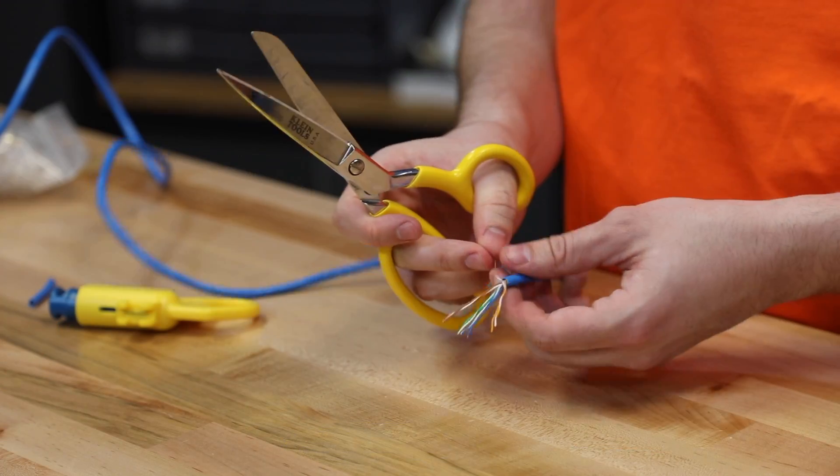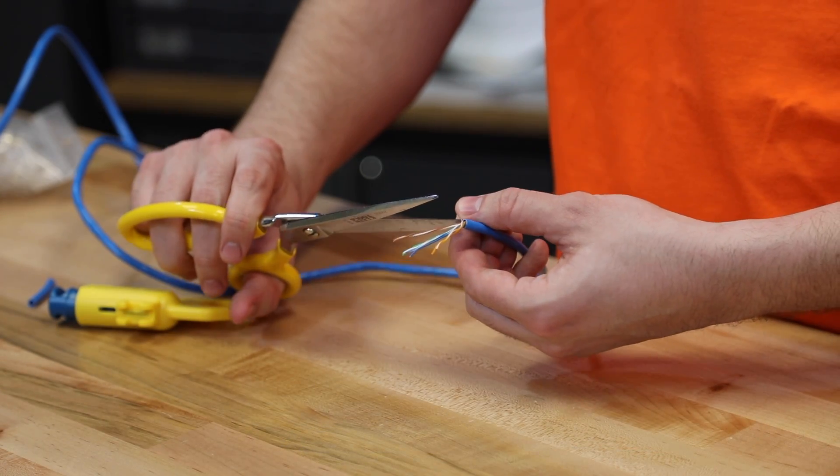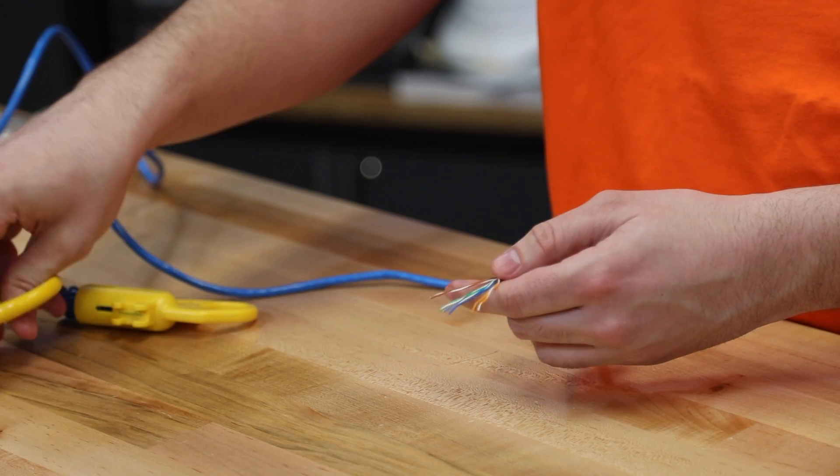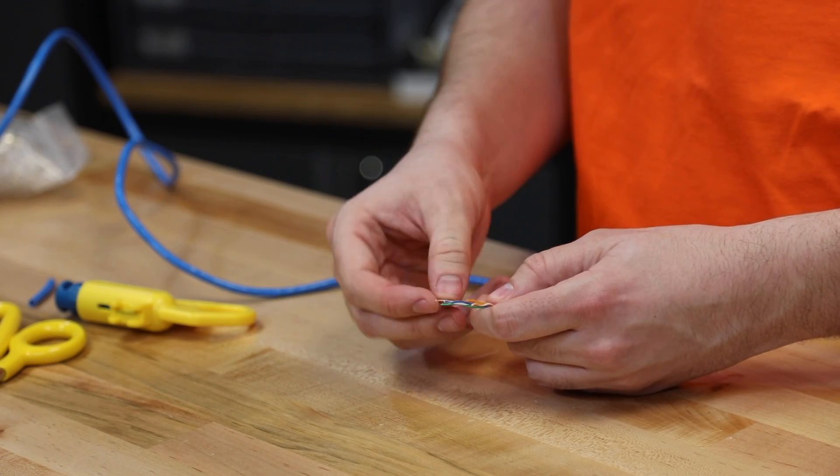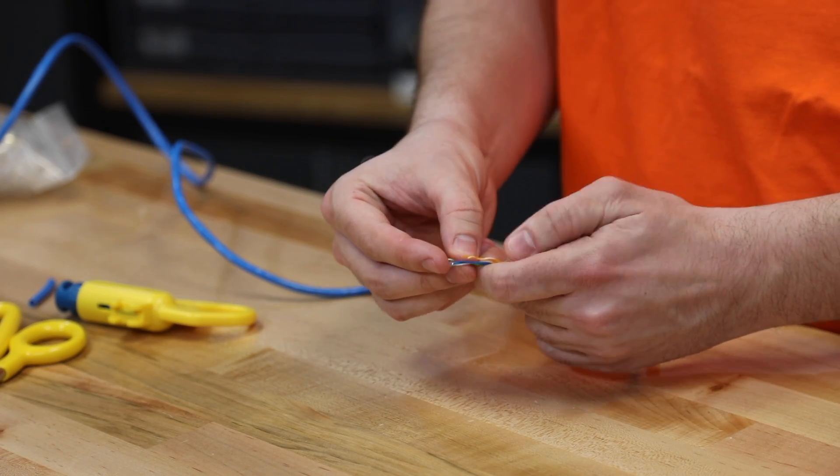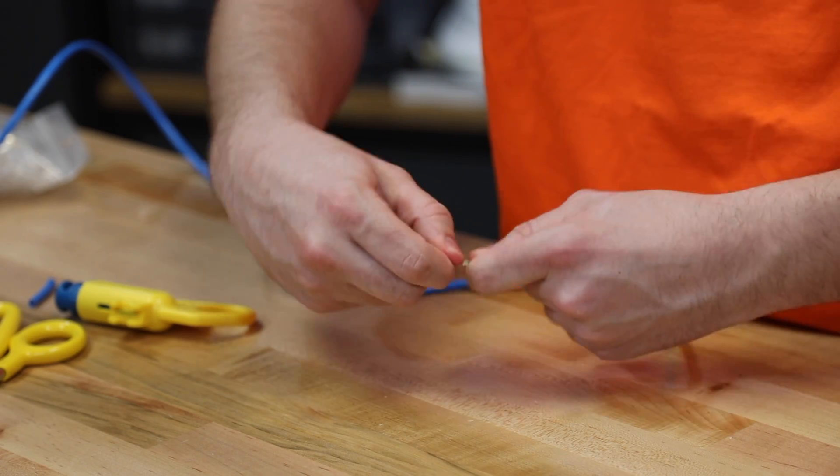Next thing you do is cut off the extra Kevlar wire, which is the white string that comes in the cable. It's not necessary. Make sure you remove all of the twists and the kinks from the wires. Wiggle them back and forth. Then you need to order them.